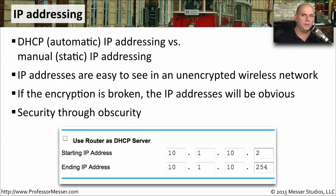Some people incorrectly believe that disabling DHCP and setting IP addresses manually is somehow more secure. But if someone is on your wireless network, they can very easily see the IP addresses that you're running. We consider this false type of security as security through obscurity, which in the end is no security at all.